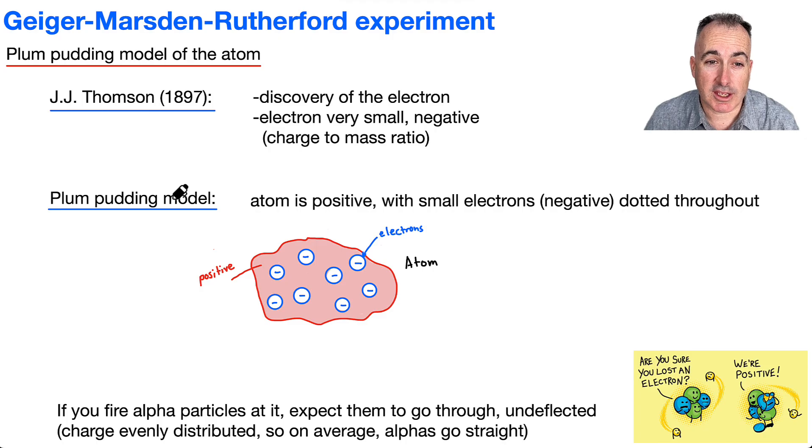The idea was that the atom itself—they didn't know it had a nucleus yet—each atom is positive. They knew it was very likely something positive, and it's got some small negative electrons dotted throughout, a little bit like plum pudding. The little electrons are negative, and the whole blob is positive.